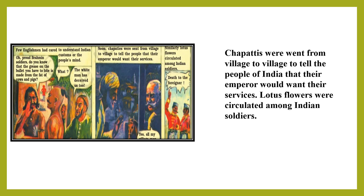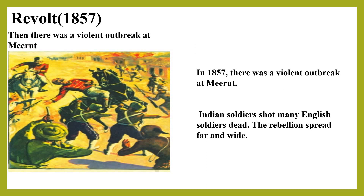The masses gave all help and shelter to the patriots. In 1857, Indian soldiers shot many English soldiers and the rebellion spread far and wide. Many landlords lost their lands. The call to drive the British government out of India was echoing everywhere, and landlords, soldiers and peasants were being united.